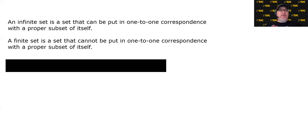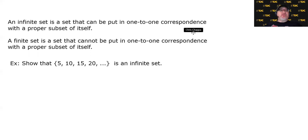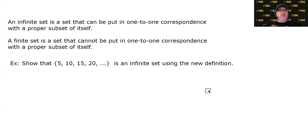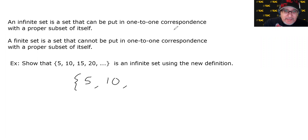Let's take a look at one quick example. We're going to show that the set {5, 10, 15, 20, ...} is an infinite set using the new definition. If we used the old definition, we would simply say its cardinality is not a natural number because we would never stop counting, therefore it's infinite. But I want to use the definition that says we can put it in a one-to-one correspondence with a proper subset of itself. First we've got to find a proper subset — let's start with the original set and try something a little algebraic.